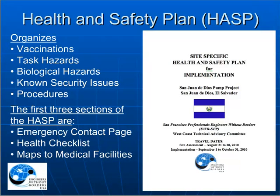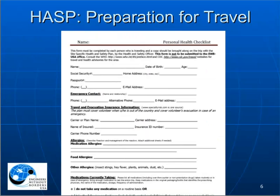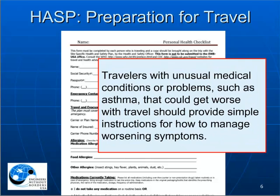The HASP guides you through the planning to minimize risks. The first three sections of the HASP are the most important documents you will need in a medical emergency: the emergency contact page, the team health checklist, and maps to medical facilities. Each member of the team must complete the personal health checklist and make several copies. The trip leader should read all these forms and put them in sealed envelopes in the first aid kit. It's also a good idea for each traveler to keep a copy on his or her person, and for the trip coordinator to have copies in sealed envelopes at home. Team members with unusual health conditions should provide instructions for managing their care if they become sick or injured.